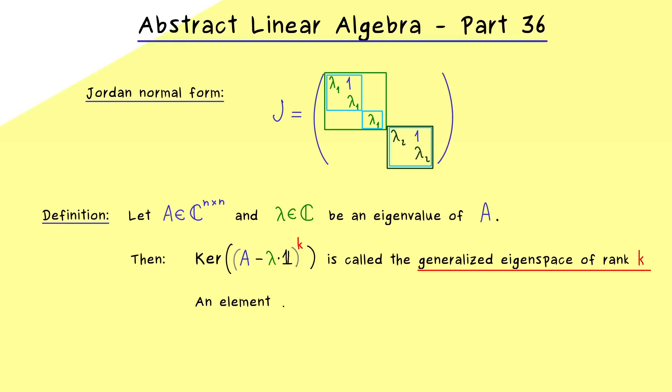This is quite simple, we just take an element from our kernel here. But we also want that x is not an element from the kernel before. This means we subtract the set where we have the kernel with the power k-1. And this guarantees that we actually have the rank K for this vector.